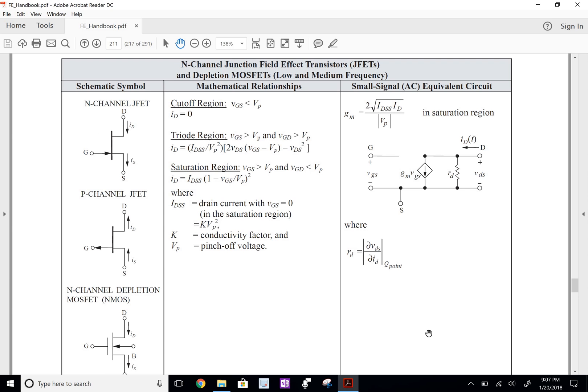So here I have it pulled up, and this is for both MOSFETs and JFETs. We have the small signal AC model here on the right where we have that ID is equal to GM times VGS, and we're not given this drain resistance at all so we can just ignore that.